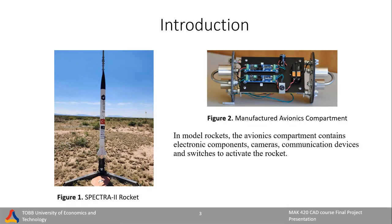In model rockets, unique parts such as electronic components, cameras, and communication tools control the movement of the rocket during flight and provide information to the ground station. Our aim is to optimize the plate on which these parts are fixed as much as possible.